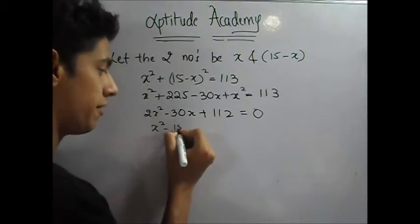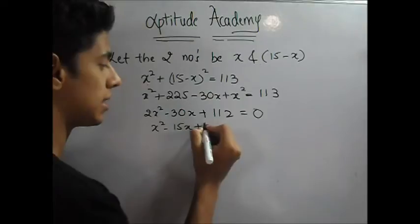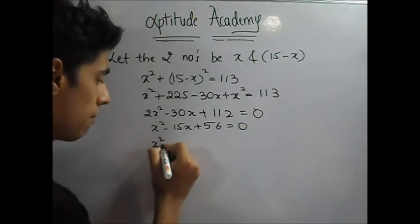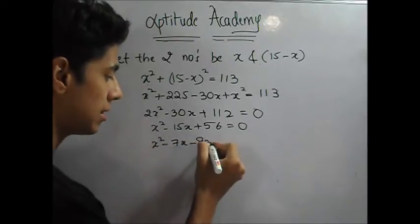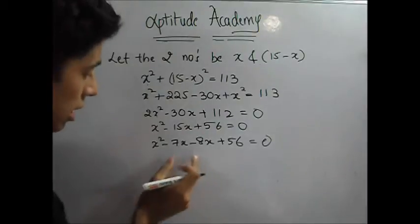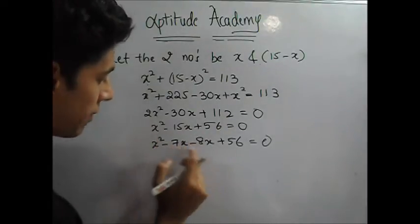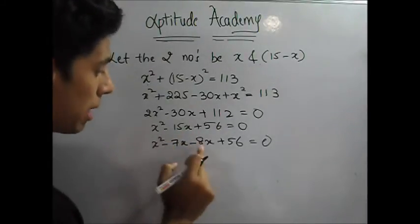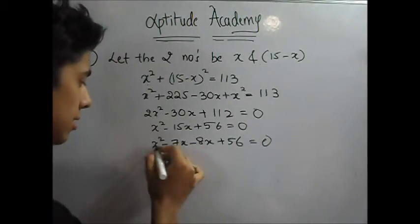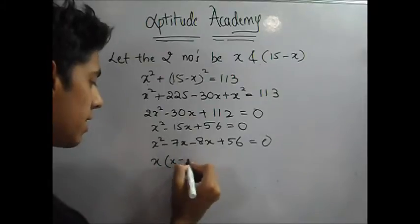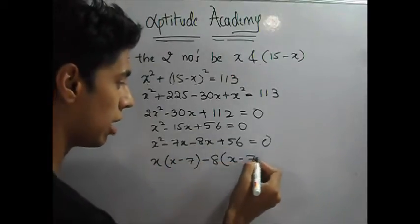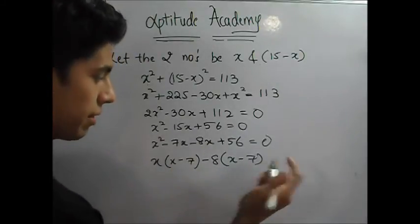So you get x square minus 15x plus 56. Now I need to factorize this. So x square minus 7x minus 8x plus 56. Now why have I taken 7 and 8? When you add them up, minus 7 minus 8 will give you minus 15. But when you multiply them, minus 7 into minus 8 will give you 56. Now take common. x is common here in these two. So x minus 7. x minus 7 minus 8 is common here. x minus 7. You need to make sure that this is the same.